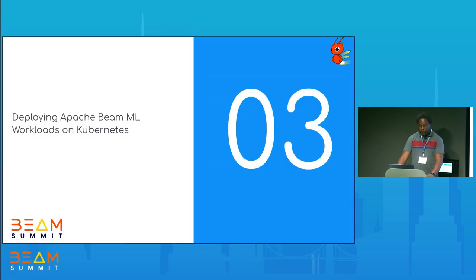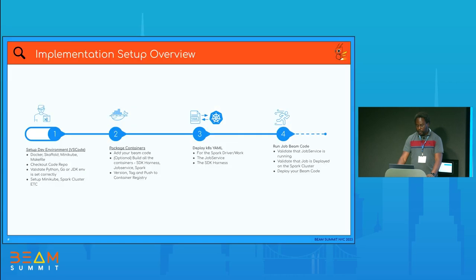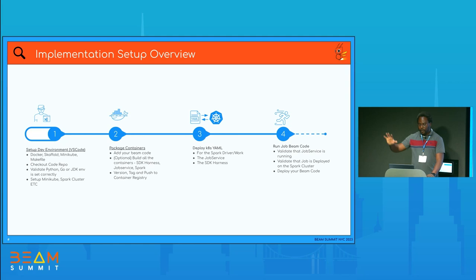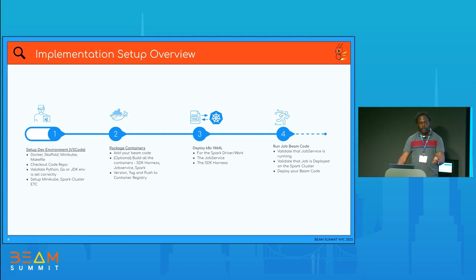I'm going to walk through some demos showing how we deploy this, using pre-recorded Minikube examples. The four steps are: set up your local environment with Docker, scaffold for building containers, and Minikube; check out the code — we have a template with everything needed; make sure Go, GoPath, and JDK environments are set up correctly; package the containers — the deployment YAML is all in the repo so you can modify it to add new components. After that, you're ready to test your Beam code locally before integrating with the team or moving to production.